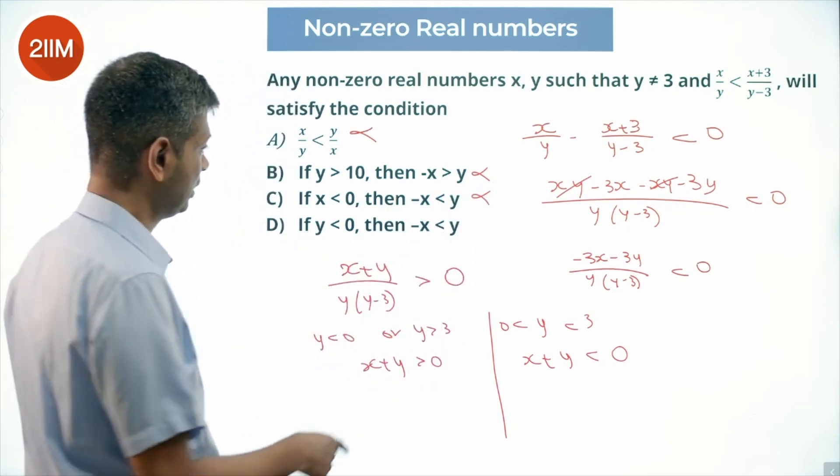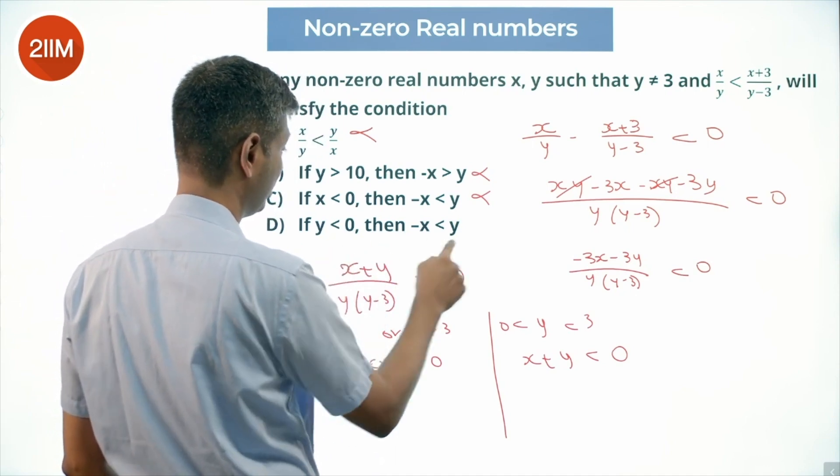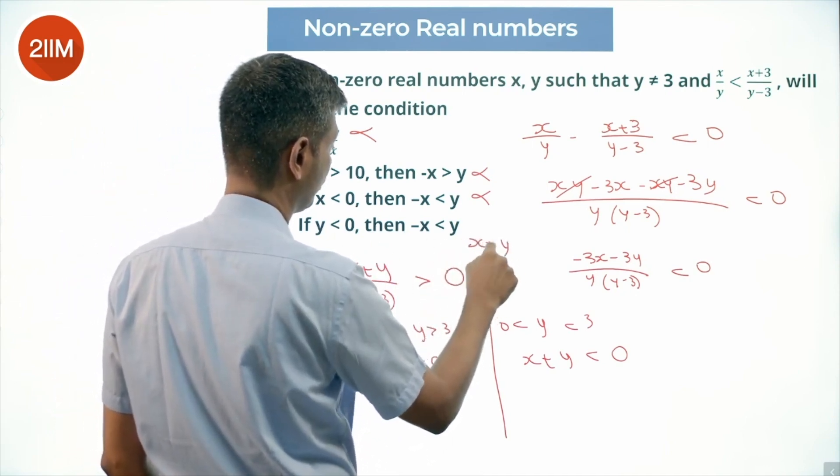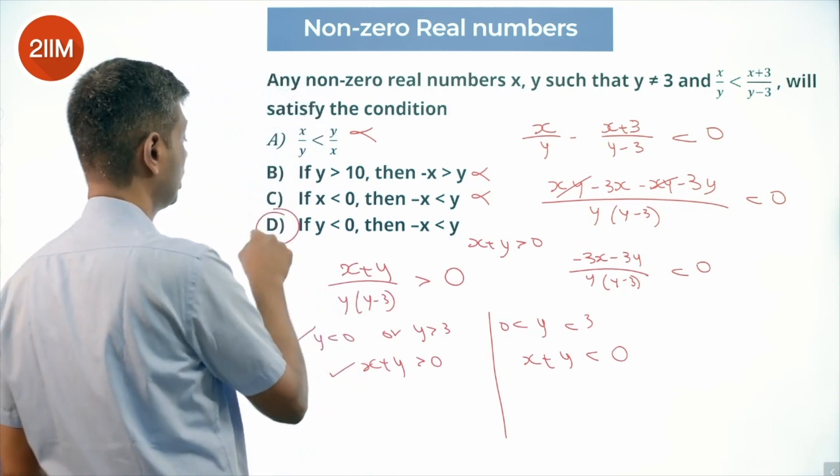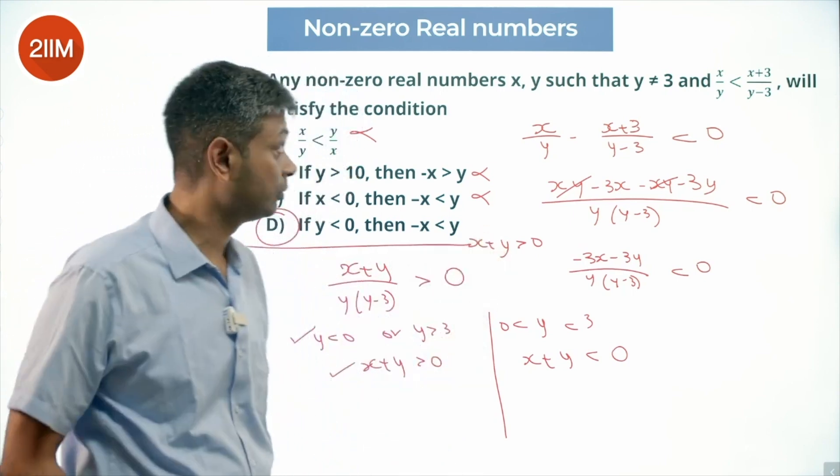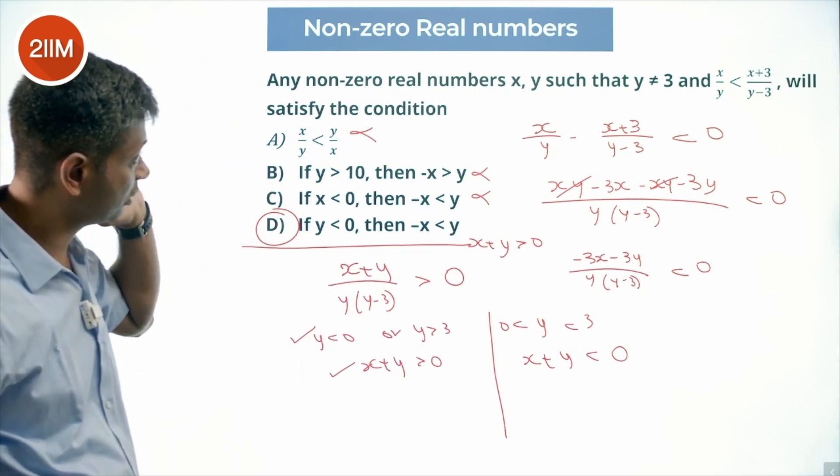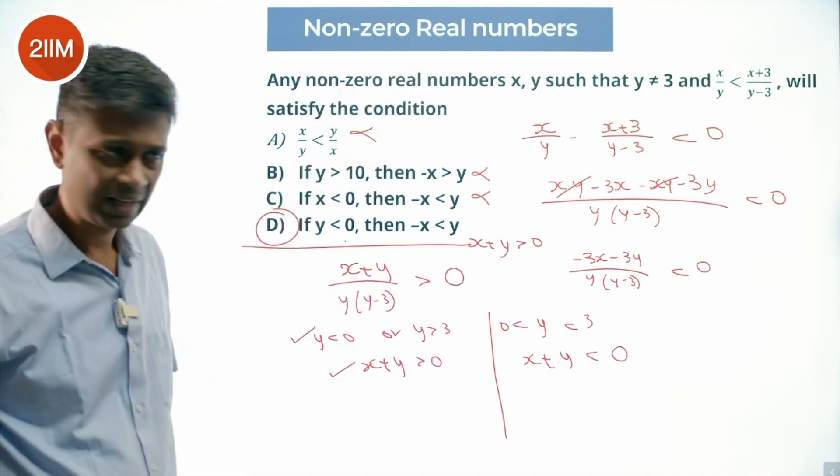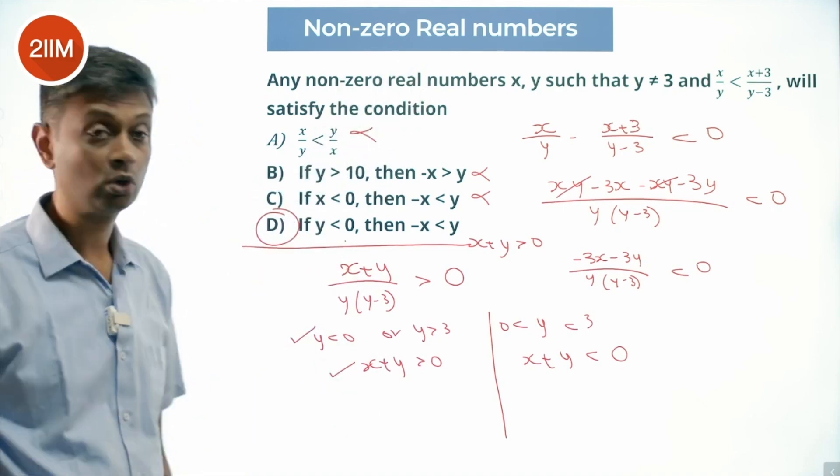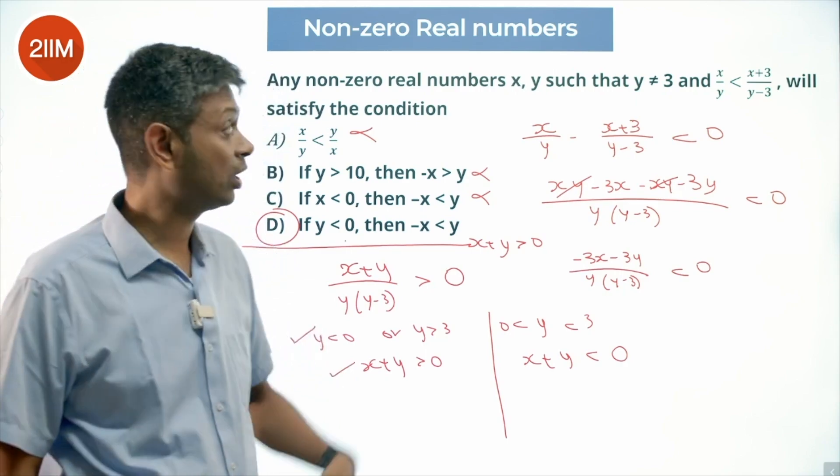x+y greater than 0, y less than 0. Nice! x+y greater than 0 and y less than 0, yep this will work. This holds good, then that will go. Any nonzero numbers x and y will satisfy the condition if this holds good. x less than 0, x+y greater than 0 will work. Sorry, y less than 0, x+y greater than 0 will work.